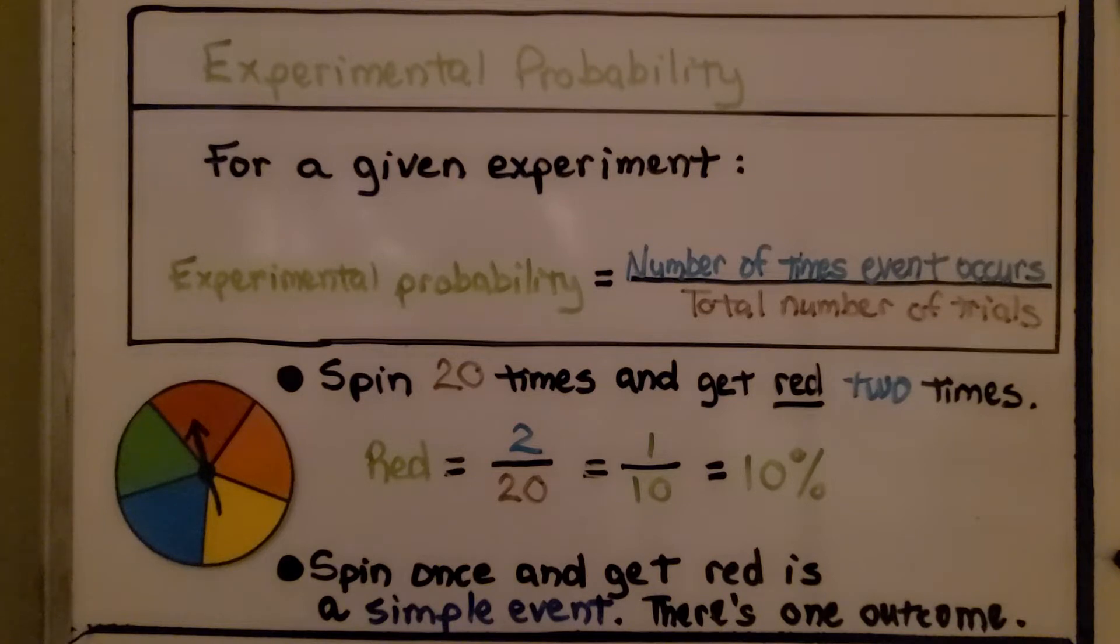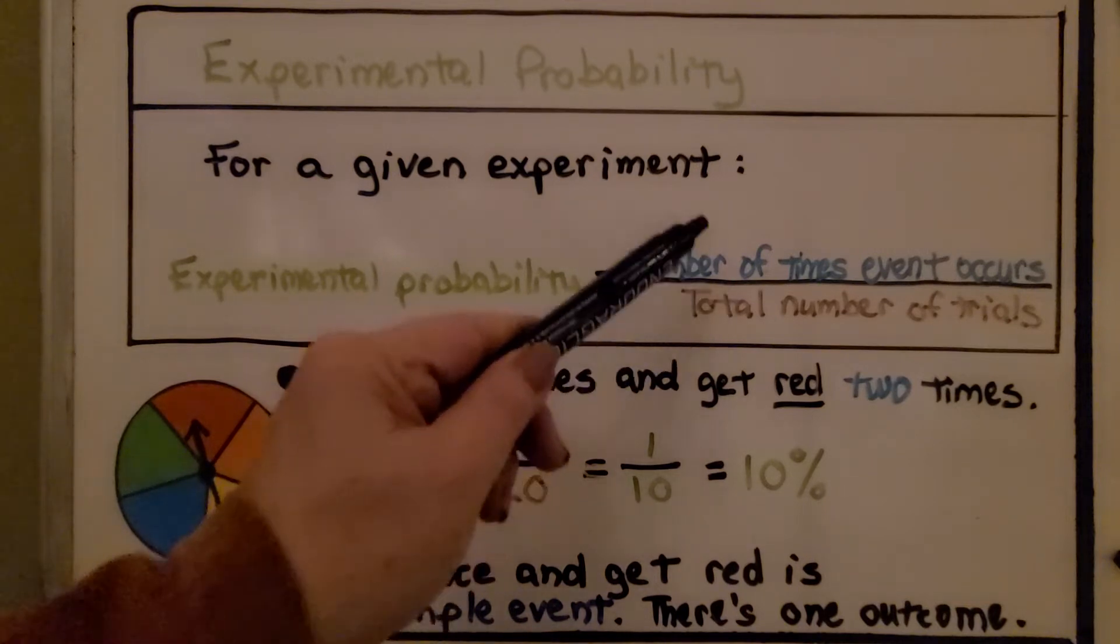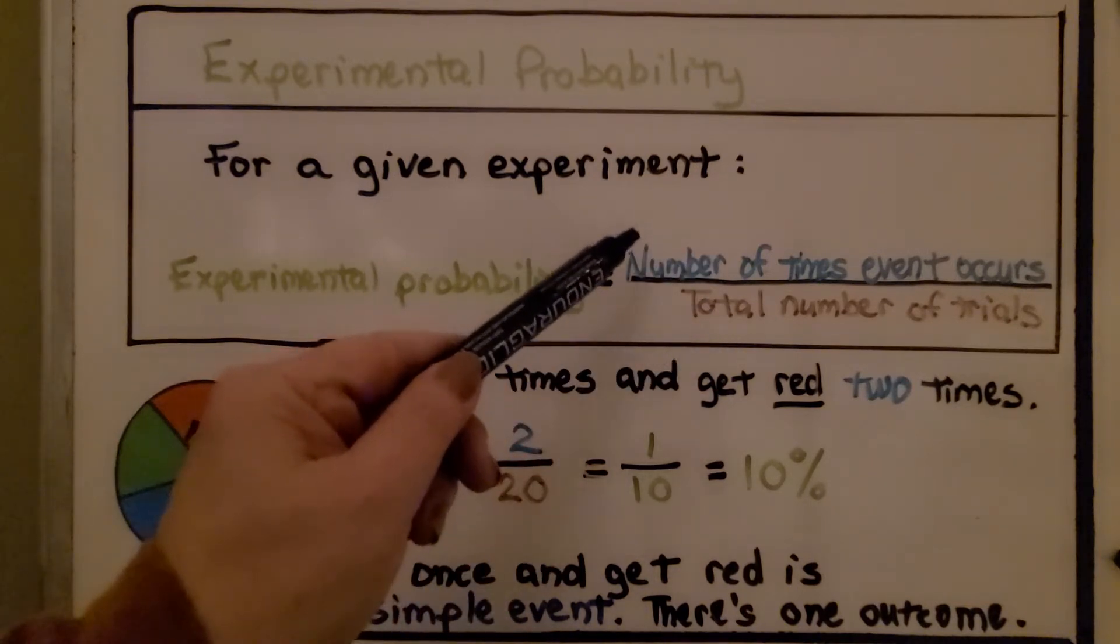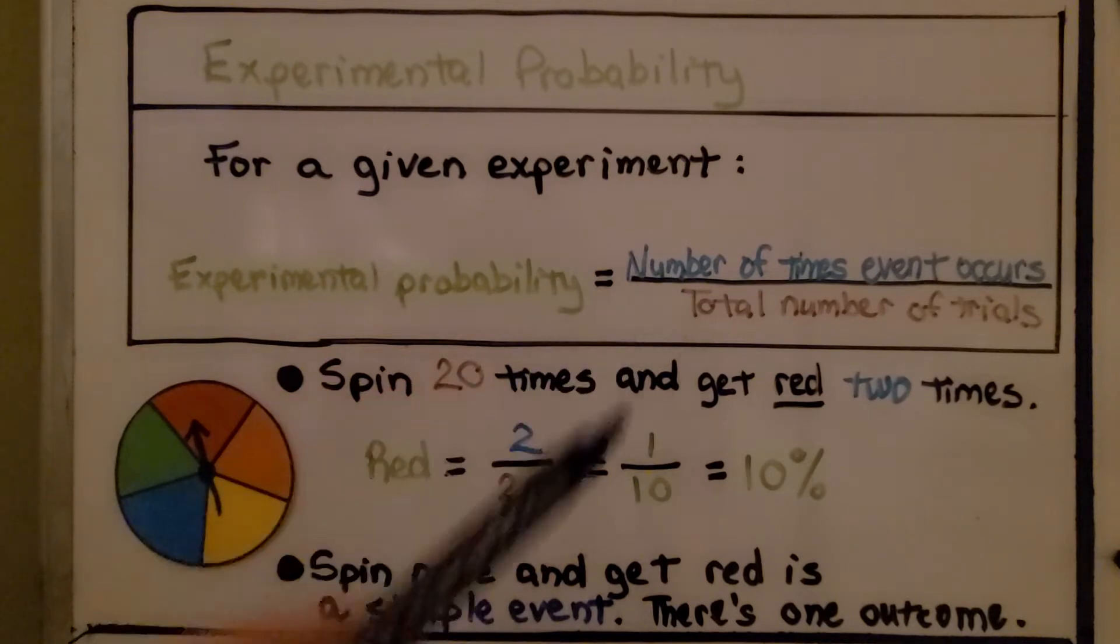So this is experimental probability for a given experiment. Experimental probability is this ratio. It's the number of times the event occurs to the total number of trials.